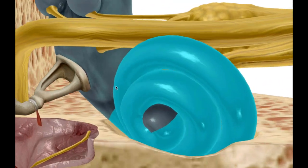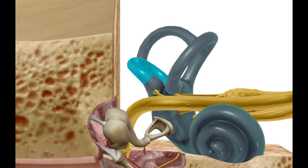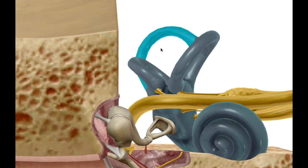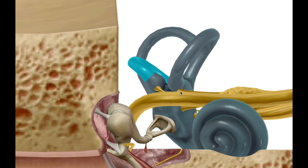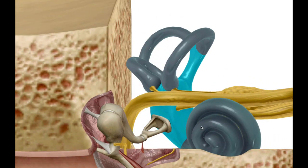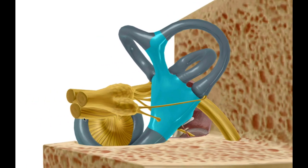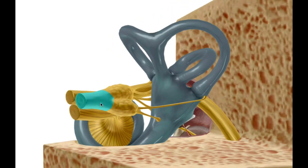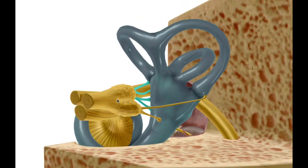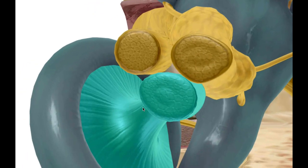Now let's look at the parts of the inner ear that deal with equilibrium and balance. You have three semicircular canals — superior, posterior, and lateral — and just below those is the vestibule, which leads into the cochlea. The semicircular canals and vestibule both handle equilibrium and balance, and all their data travels via the vestibular nerve, which joins with the cochlear nerve to form cranial nerve eight: the vestibulocochlear nerve.